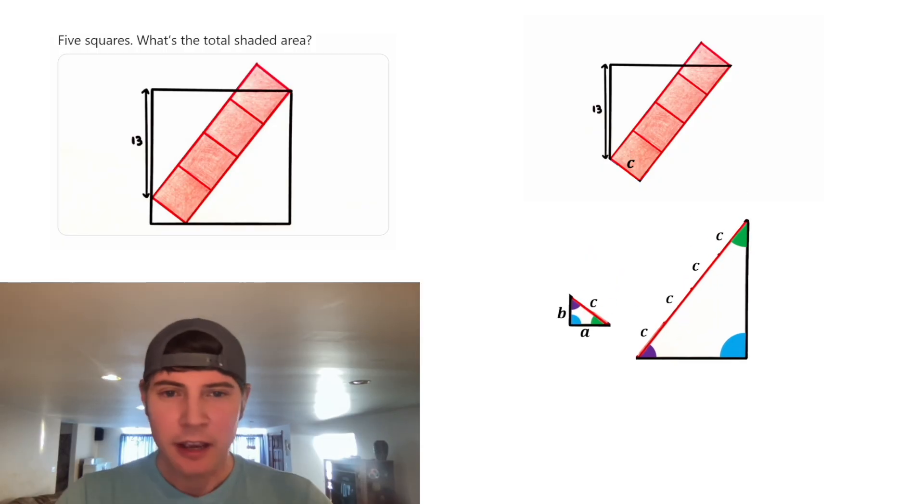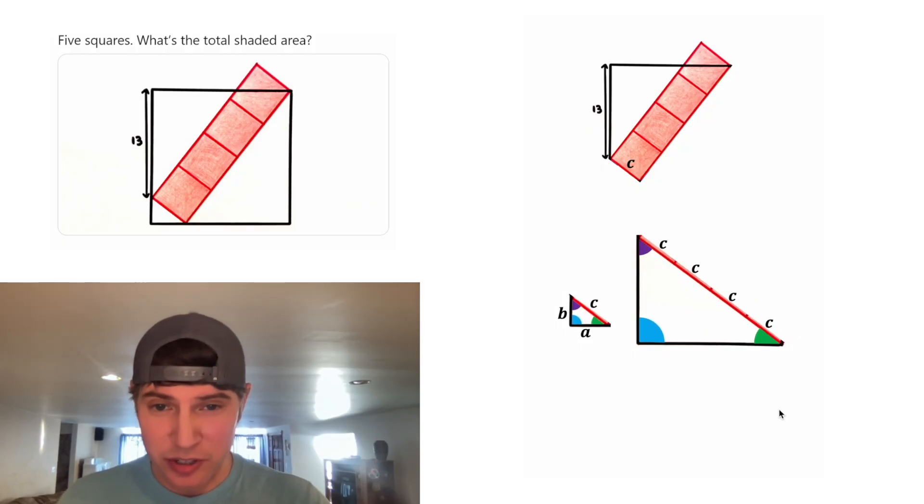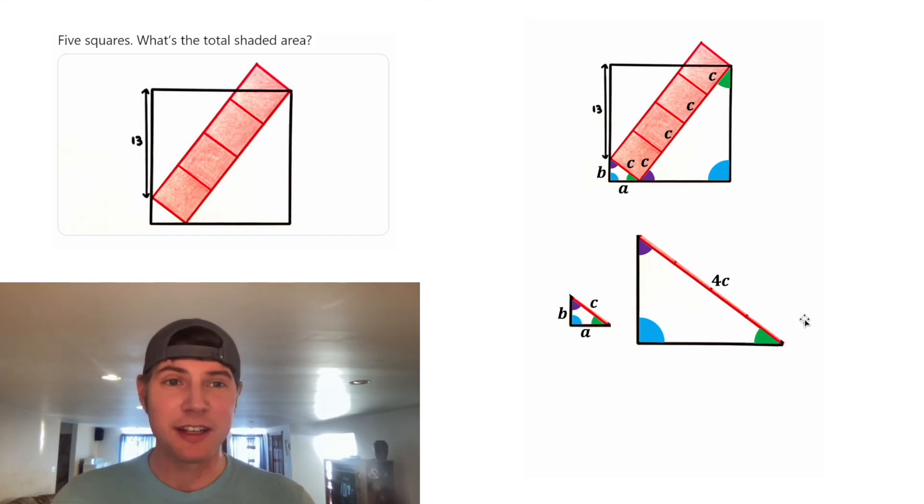I don't think there's anything else I know for now, so let's pull out these triangles. And if we rotate this one, now the two similar triangles are oriented the same. Let's change these four Cs into four C. And now since these are similar triangles, we can find the scale factor. From C to four C, that means our scale factor is four.